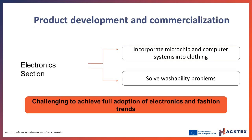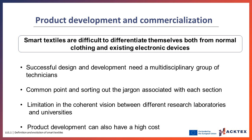In product development and commercialization, the disconnected contributions from the electronic and clothing fields lead to incompletely integrated applications. The electronics sector still has a main role in the design of a product, and consequently the main research efforts focus on solving technical problems such as incorporating microchips and computer systems into clothing or solving washability problems. Application developments focused on the clothing industry are still unusual and do not integrate the special product development and processing techniques of this sector, making it really challenging to achieve full adoption of electronics and fashion trends. As a result, smart textiles are difficult to differentiate from normal clothing and existing electronic devices.